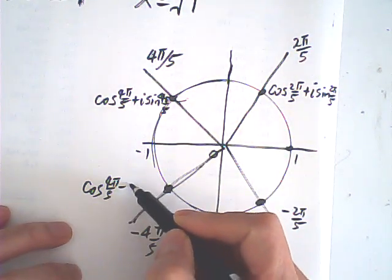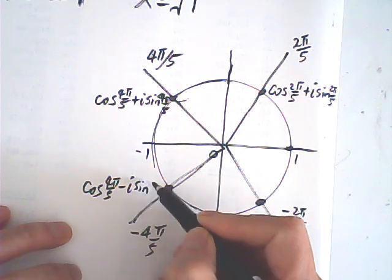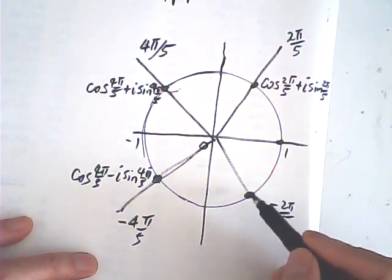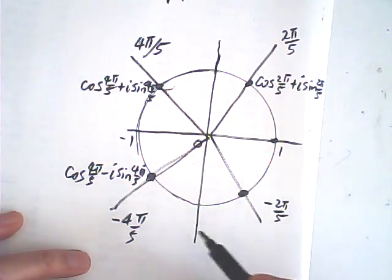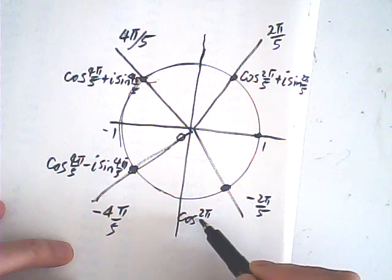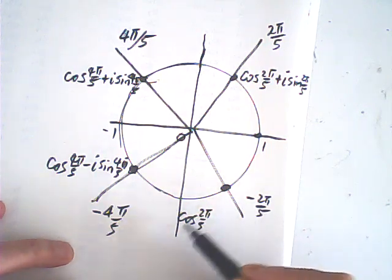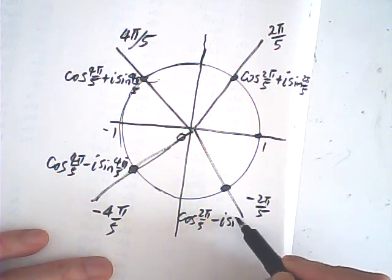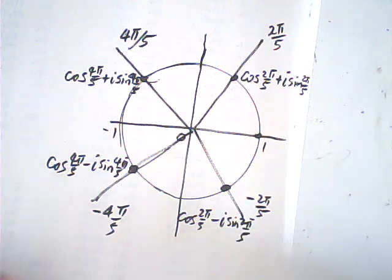Minus i sine 4 pi over 5, and minus i sine 2 pi over 5.